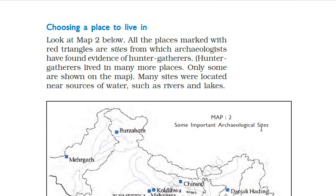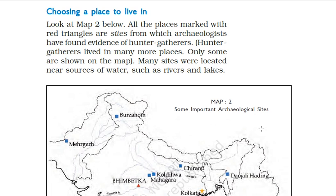Coming to the next topic: choosing a place to live. Look at the map below. All the places marked with red triangles are sites from which archaeologists have found evidence of hunter and gatherers. Hunter and gatherers lived in many more places — only some are shown on the map. Many sites were located near sources of water such as rivers and lakes.